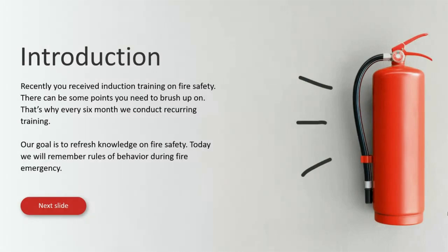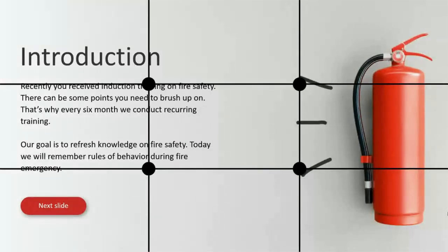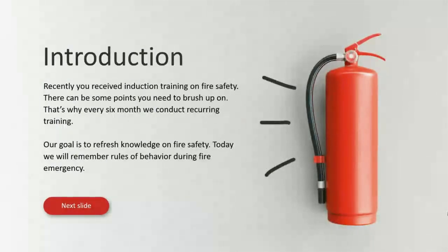To fix this, we divide the slide into nine parts according to the Rule of Thirds by drawing two equally spaced horizontal and two equally spaced vertical lines. With these guidelines, we can clearly see that the text and image are in the wrong place. We move text and images to the correct positions, then remove the helper lines. Now text and image are closer to each other — no distracting empty space between them, and it's very easy for the student to start reading and look at the image.